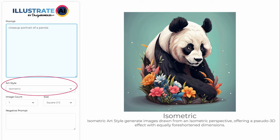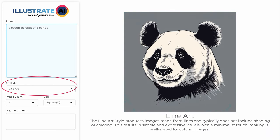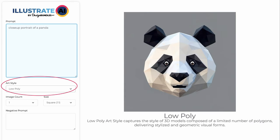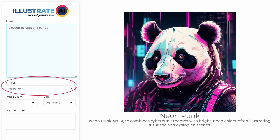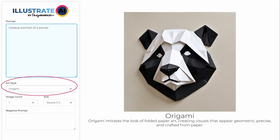Isometric art style generates images drawn from an isometric perspective, offering a pseudo-3D effect with equally foreshortened dimensions. The line art style produces images made from lines and typically does not include shading or coloring — this results in simple and expressive visuals with a minimalist touch, making it well-suited for coloring pages. Low poly captures the style of 3D models composed of a limited number of polygons, delivering stylized and geometric visual forms. Modeling compound simulates the look of pieces made with malleable materials such as clay or plasticine, yielding visuals that appear tactile and hand-crafted. Neon punk art style combines cyberpunk themes with bright neon colors, often illustrating futuristic and dystopian scenes. Origami imitates the look of folded paper art, creating visuals that appear geometric, precise, and crafted from paper.